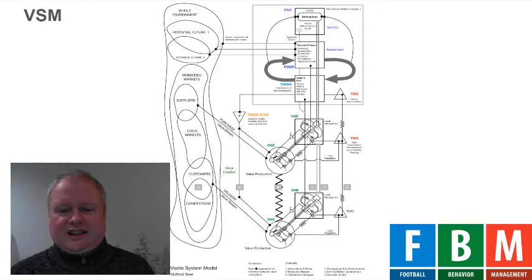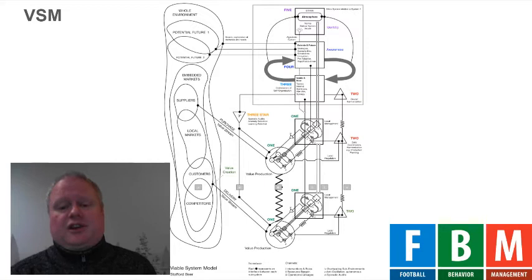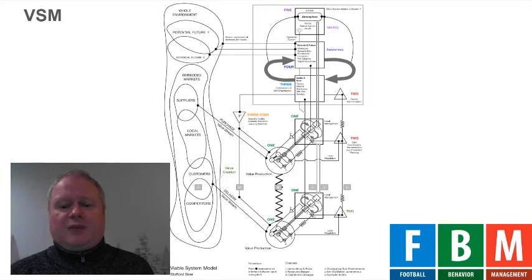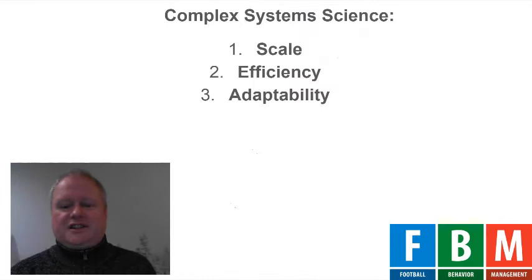System Four — the scouts, technical director, and sporting director — are responsible for the adaptability of the club. They have to make sure they develop the club, whereas System Three, the internal daily operations, are responsible for running the club. So you can see that the Viable System Model adheres to the prerequisites of complex system science: scale, efficiency, and adaptability. But the same goes for our brain — our brain does all three of those things.